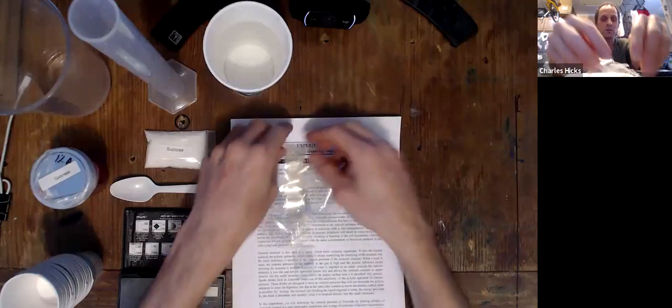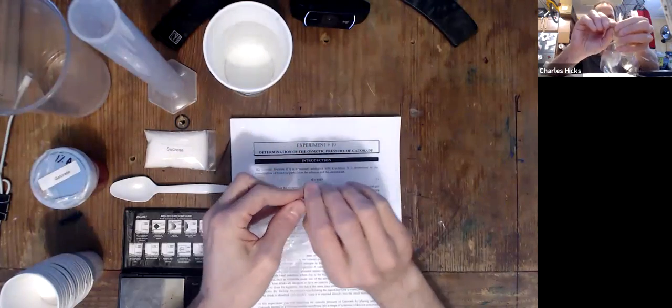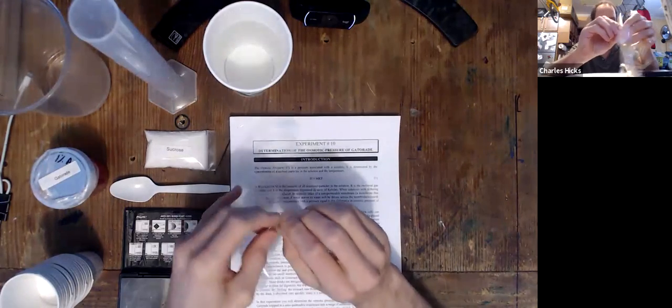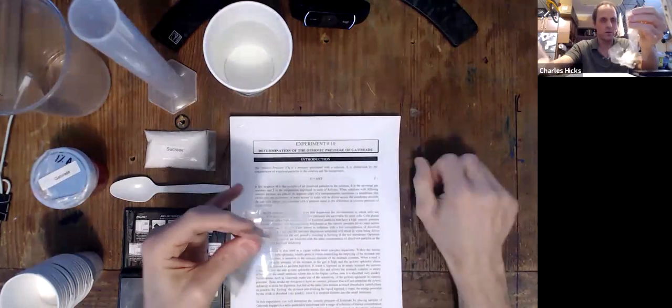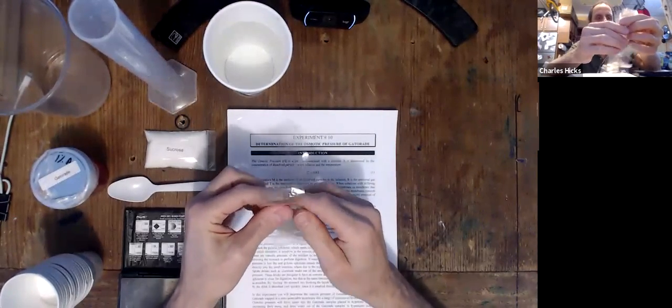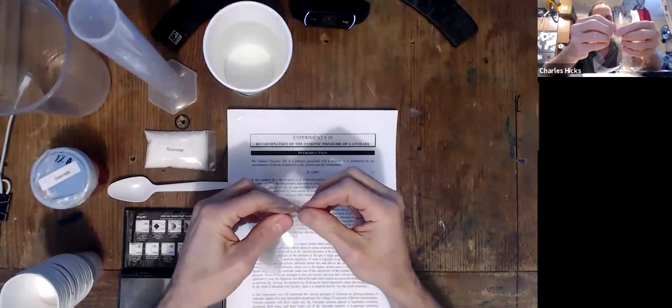Now the first thing we have to do is undo the staple on the dialysis tubing so that we can get these apart. And these pieces of tubing have to be incubated in water for a while in order for us to be able to open them up.